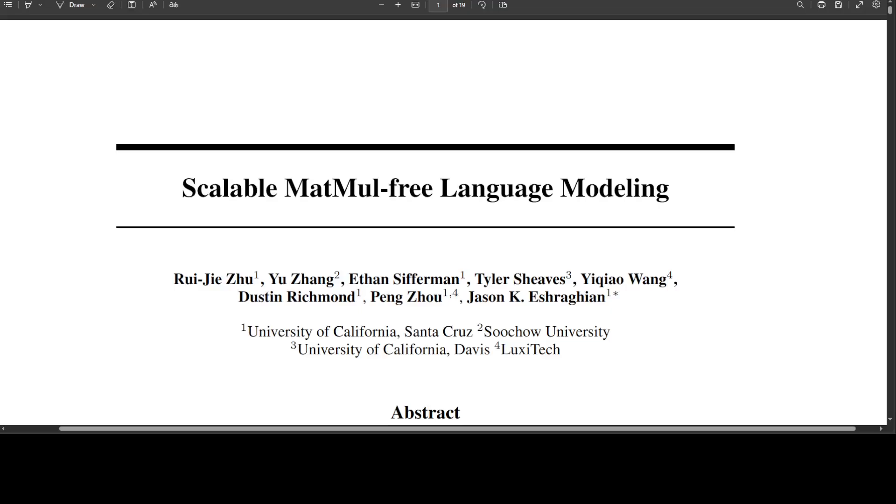MatMul stands for Matrix Multiplication. MatMul is a fundamental operation in neural networks that combines two matrices to produce another matrix. Think of MatMul like a special kind of multiplication that helps neural networks learn and represent complex relationships between data.